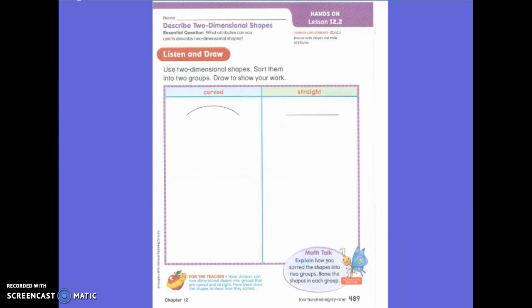So remember we also sorted the two-dimensional shapes. Today we're going to sort again on this front page. In this box right here I want you to sort shapes that are curved. In this box right here I want you to draw shapes that have straight sides. So go ahead and get out your top colorful page and begin doing that now.